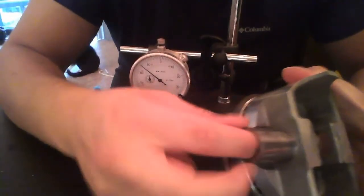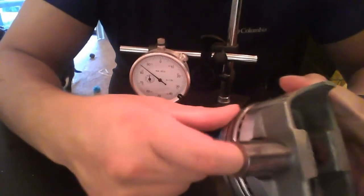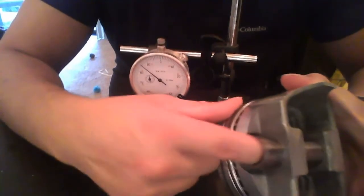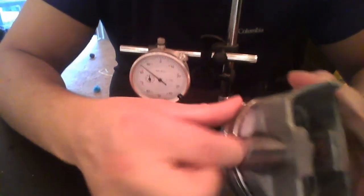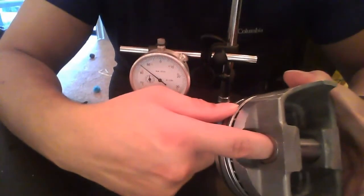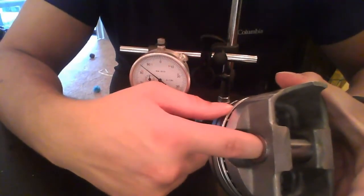The go-no-go gauge will be sized per the tolerance amount. If it goes all the way in, it's good. It has to go all the way in, though.